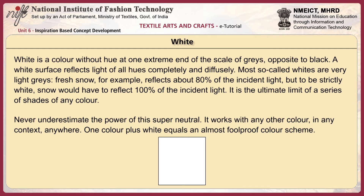White is a color without hue at one extreme end of the scale of greys, opposite to black. A white surface reflects light of all hues completely and diffusely. Most so-called whites are very light greys — fresh snow, for example, reflects about 80% of incident light, but to be strictly white it would have to reflect 100%. Never underestimate the power of this super neutral: it works with any other color in any context, and one color plus white equals an almost foolproof color scheme.